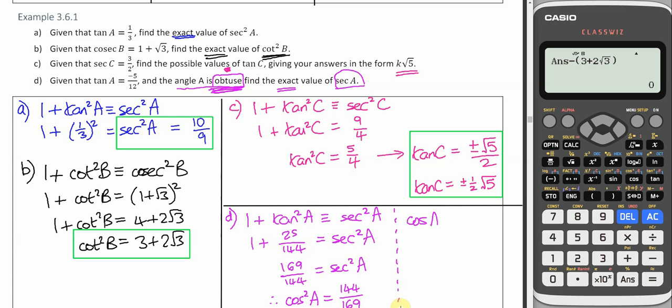144 just turns out to be 12 squared. 169 is 13 squared. At the moment, I'm going to put plus or minus.